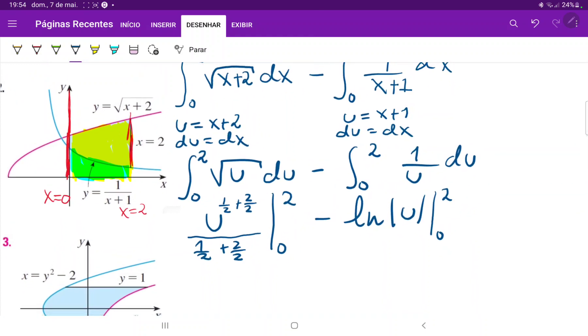So now I'm just going to substitute back our values for u and then just apply our boundaries. So this is u to the 1 half plus 2 over 2, this is u to the 3 halves times 2 over 3, right? And then I'm just going to substitute it back in, so u is equal to x plus 2, so let me just change this.